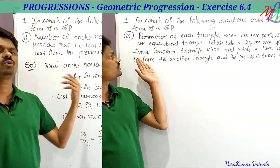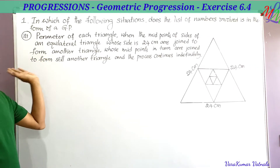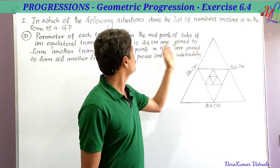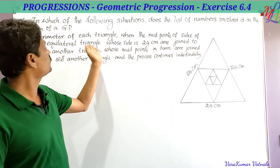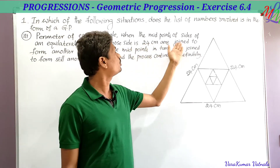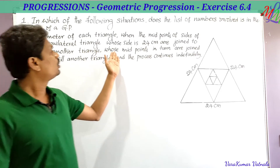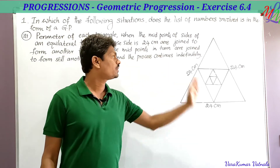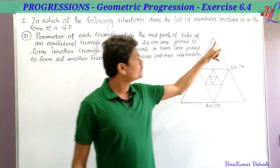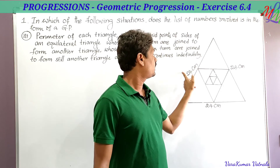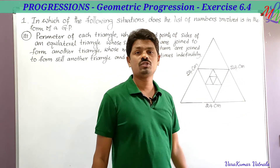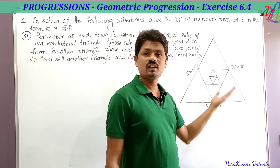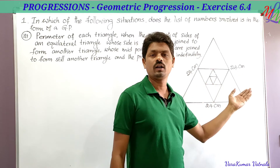Next is the third part of the first problem: the perimeter of each triangle when the midpoints of the sides of an equilateral triangle whose side is 24 centimeters are joined to form another triangle, whose midpoints in turn are joined to form still another triangle, and the process continues indefinitely.